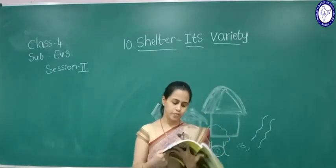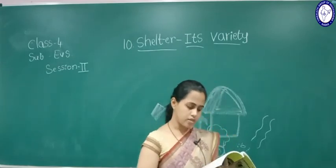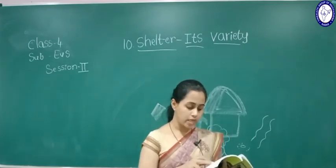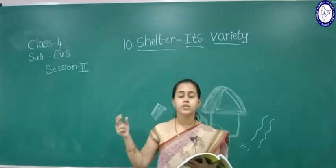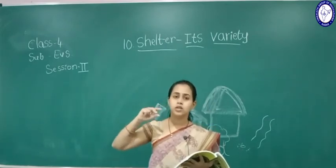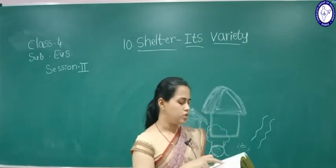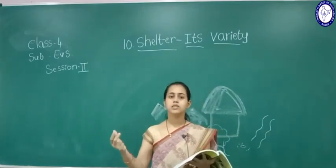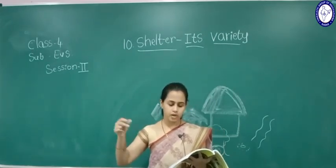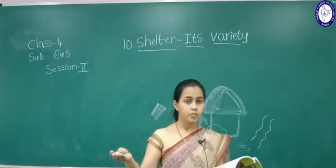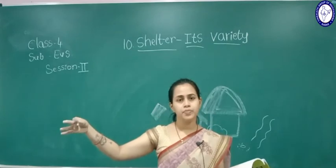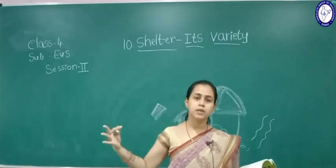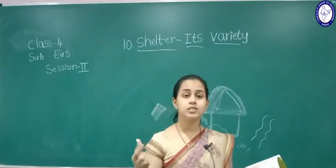Do you know this? Burj Khalifa in Dubai is the tallest building in the world. Its height is 829.2 meters, about 2722 feet. Dharavi is in Mumbai — it's a slum area and the most largest slum. There are about 10 lakh people living in that small area. It is the largest slum area of Asia.